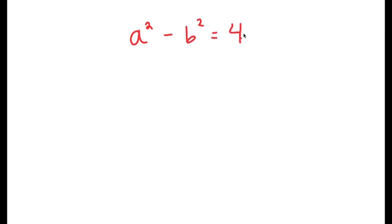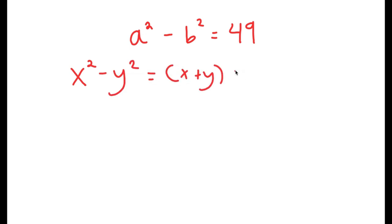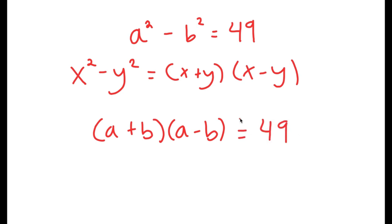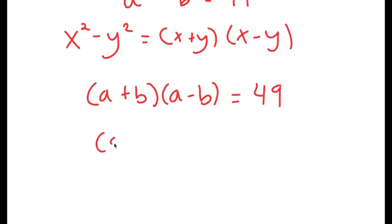In this problem, I'm going to solve the equation a squared minus b squared equals 49. To solve this, I'll use the difference of squares property: x squared minus y squared equals (x plus y) times (x minus y). In this case, a squared minus b squared becomes (a plus b) times (a minus b) equals 49.